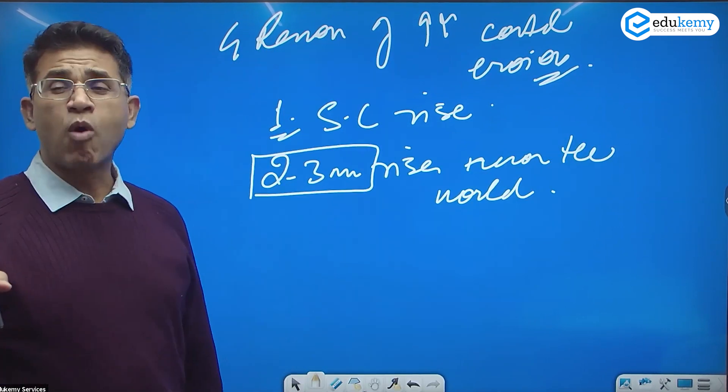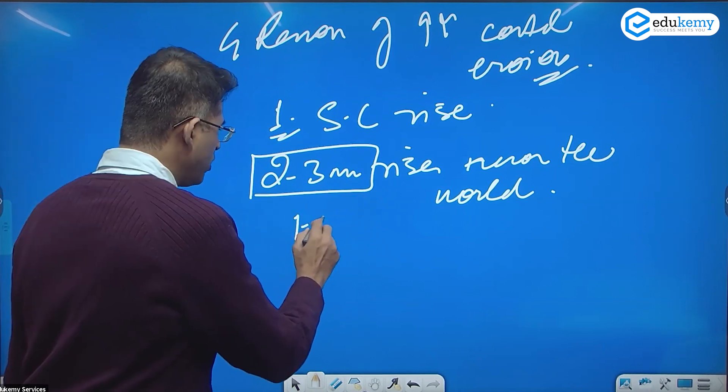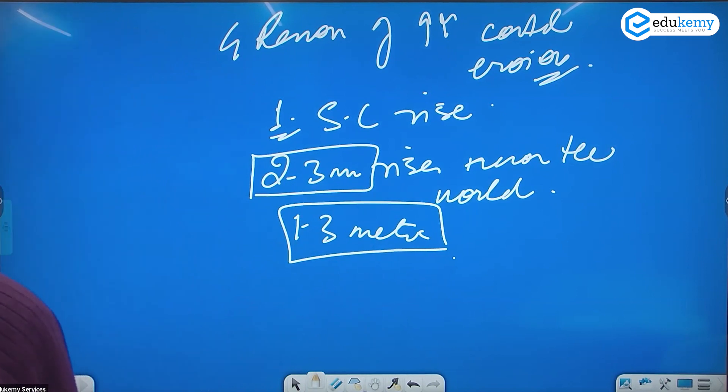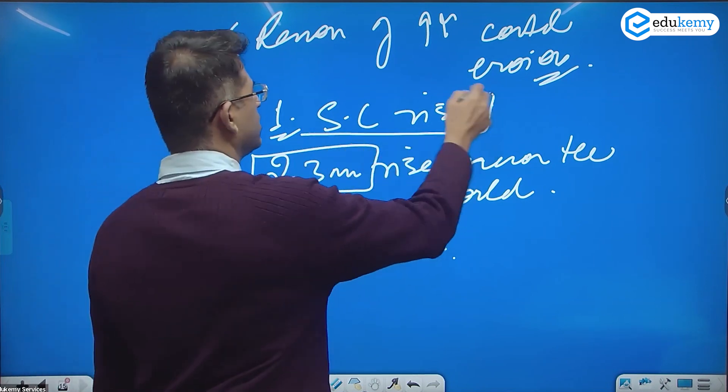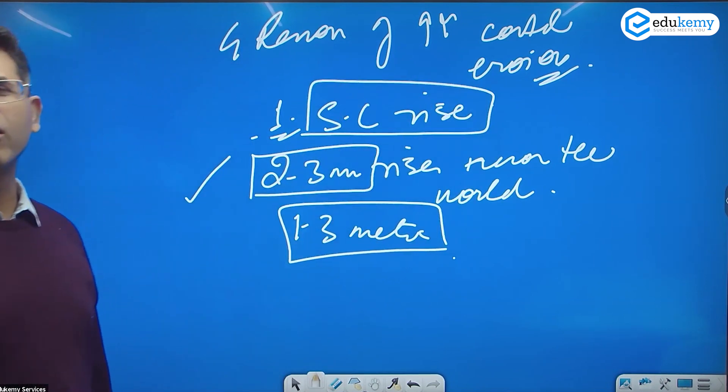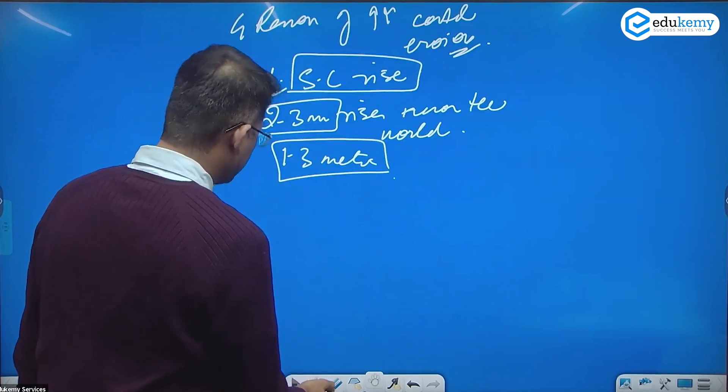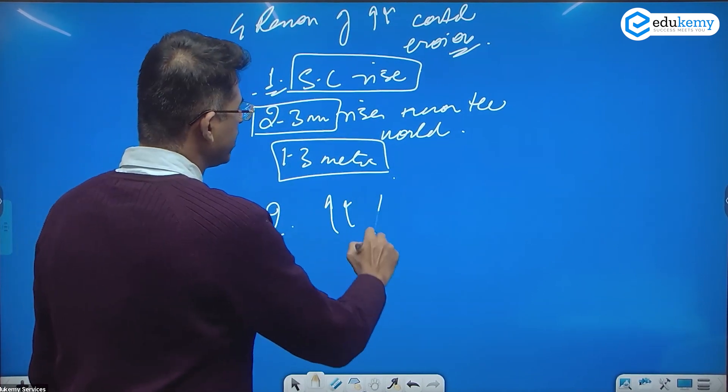Across the world, this already is a reality. This is resulting in erosion along the coasts. That's one reason. The second reason is increase in frequency of storms and storm surge mainly in the tropical and subtropical waters.